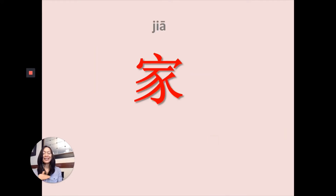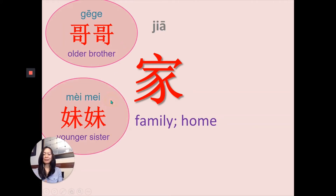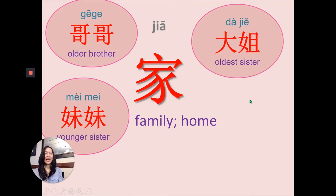The first character we are about to learn is 家, meaning family. Your family members: 哥哥 — older brother. 妹妹 — younger sister. 大姐, or 大姐姐 — oldest sister.